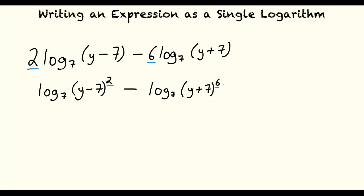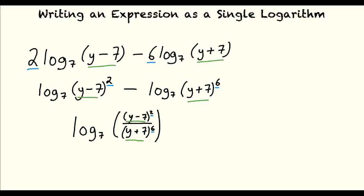Now we can use the quotient property to write the expression as a single logarithm, right? That's right. This example shows how we can use multiple properties of logarithms when solving one problem. Using the quotient property, our final answer is log base 7 of (y minus 7) squared divided by (y plus 7) to the sixth power.